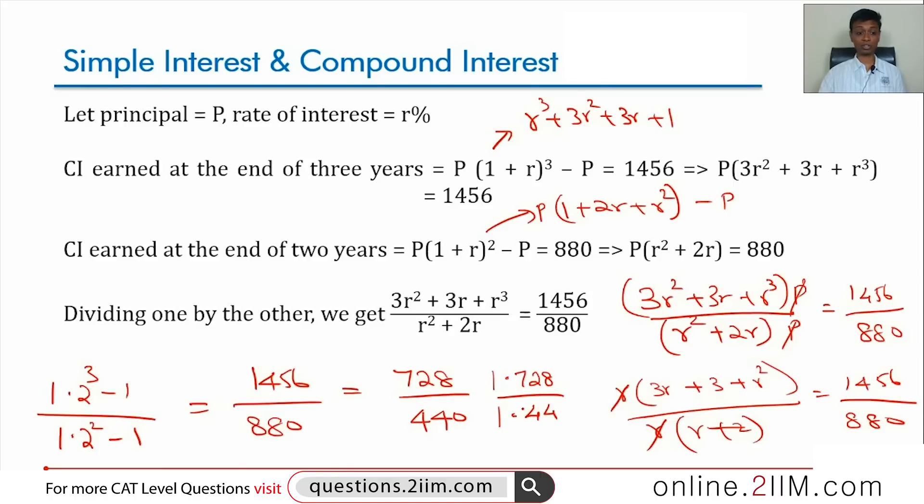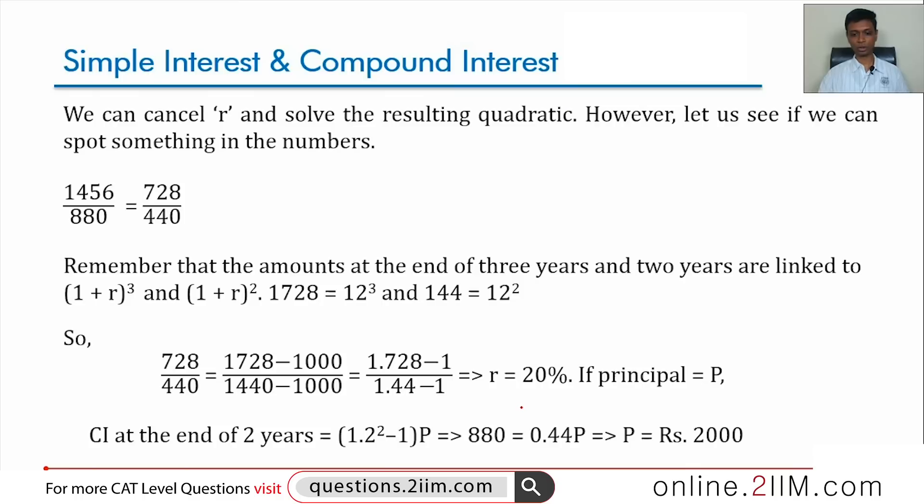So, I am going to capture this digitally and then build from there. If you can sense that rate of interest is 20 percent, this is 728 by 1.440 or 0.728 by 0.4 or 1.728 minus 1 by 1.44 minus 1. This is not easy.